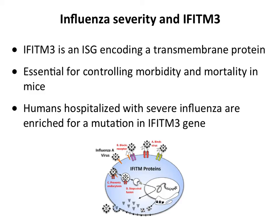Another interesting gene family is IFITM — interferon-stimulated membrane proteins. IFITM3 is one of them; its function is not fully understood, but people who develop severe pneumonia after influenza virus infection are enriched for a mutation in this gene. The IFITM proteins may block attachment, endocytosis, fusion, or release of virus. Exactly how IFITM3 blocks flu is unknown, but people with mutations in this gene are more likely to develop severe influenza.